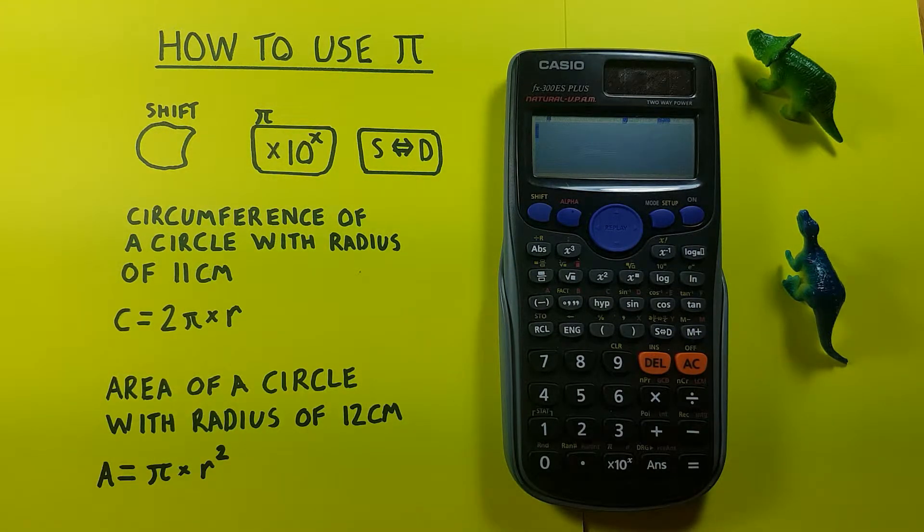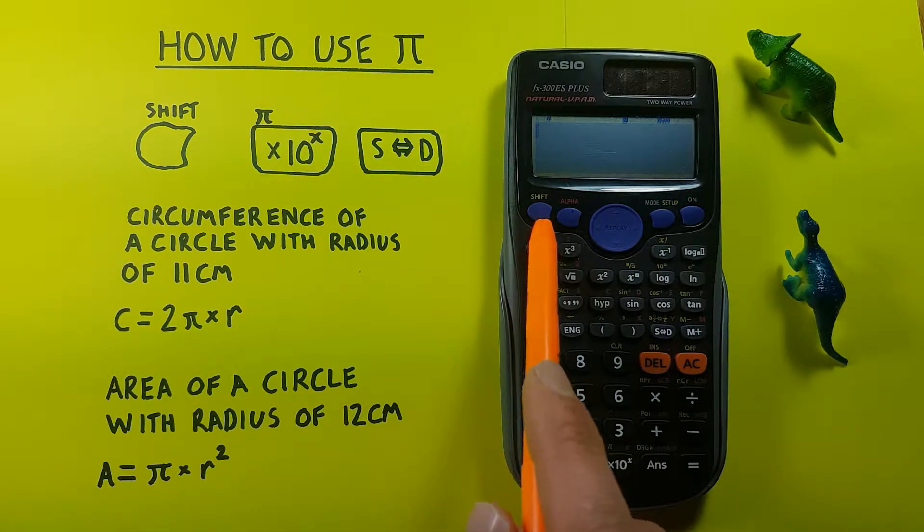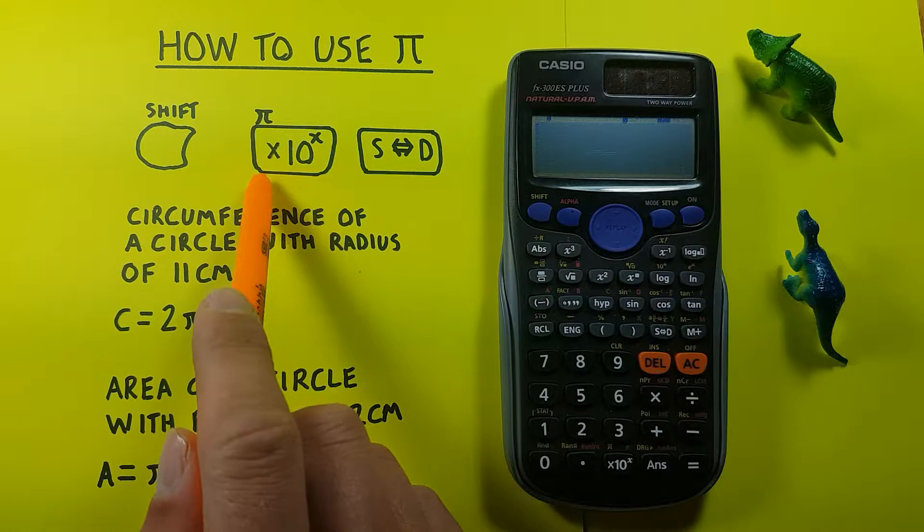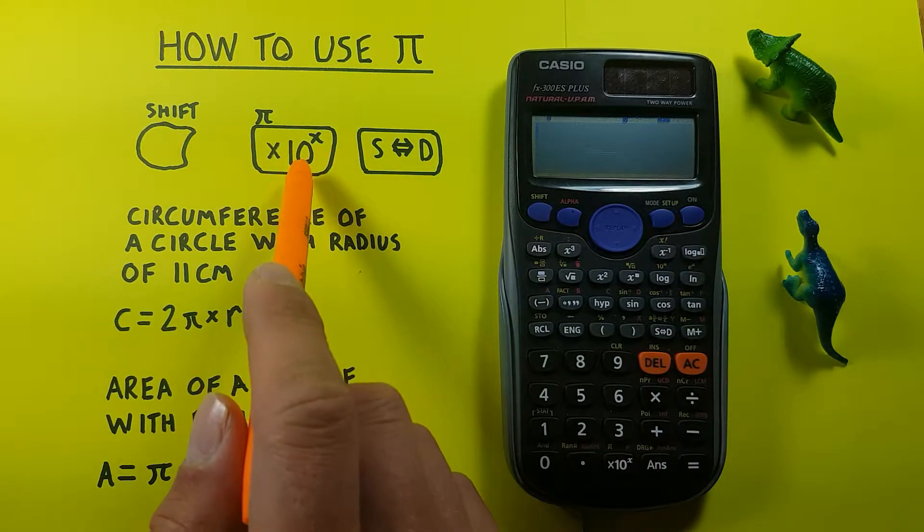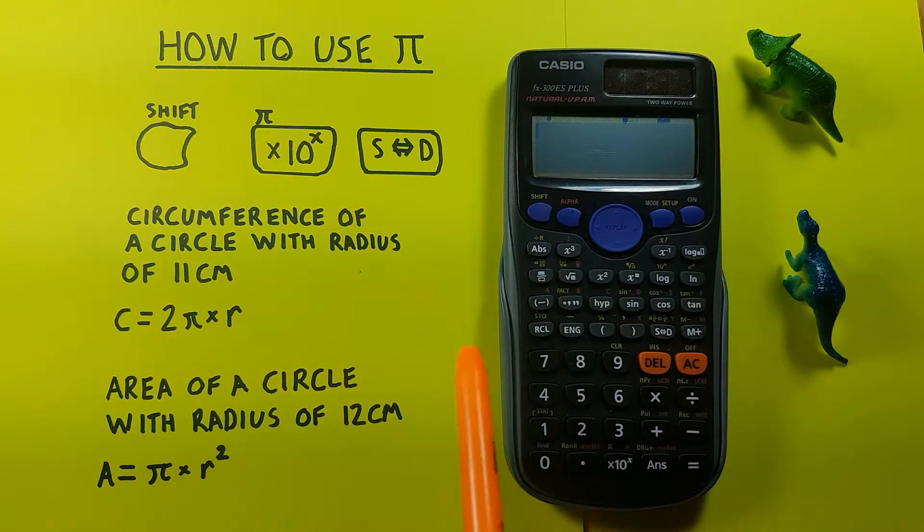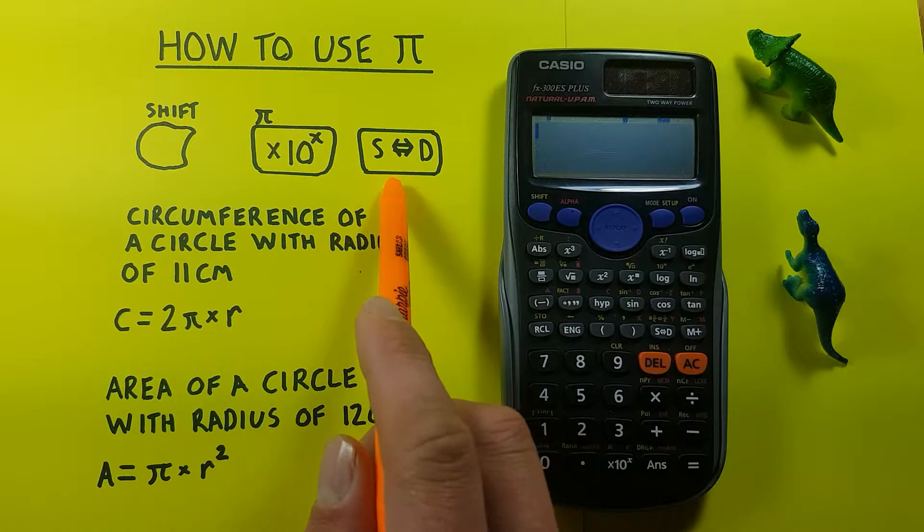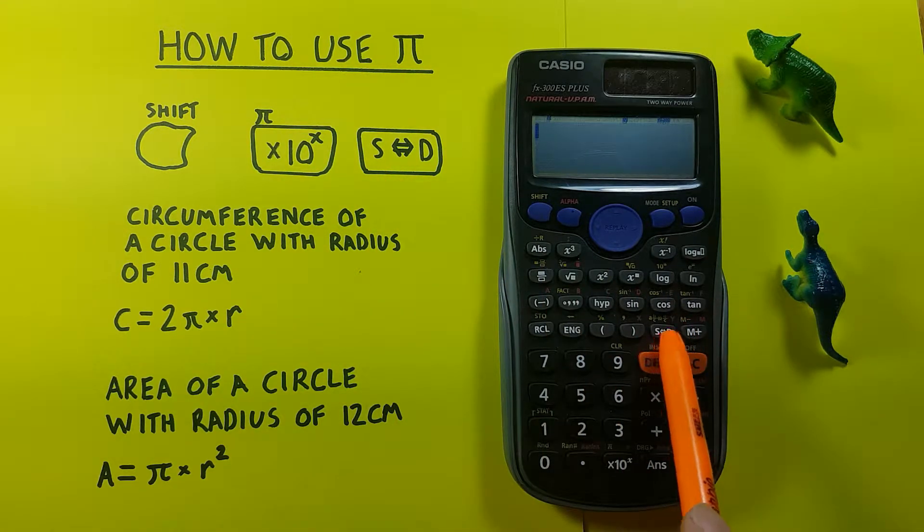To do this we'll be using the shift key located here, the times 10 to the power of key with the second function of Pi or shift function of Pi located down here, as well as the s to d key located right here.